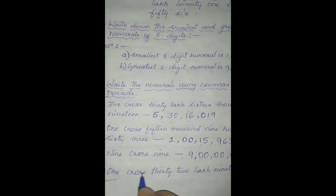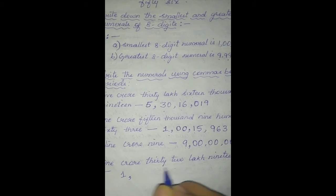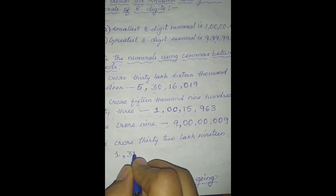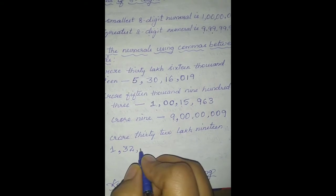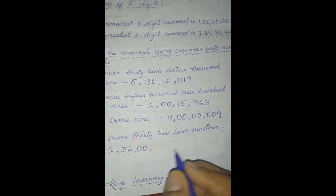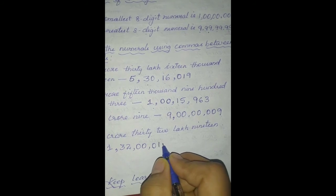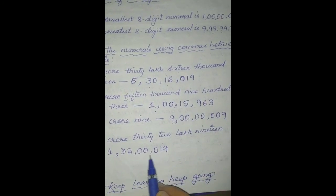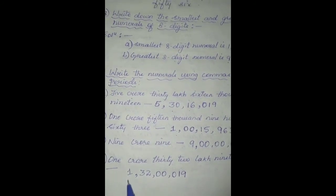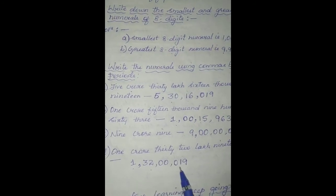Next one: 1 crore, 32 lakhs, 19. Start with 1 crore, 32 lakhs. There is no thousands place, so write 0. There is no hundreds place either, so write 19. Count the digits: 1, 2, 3, 4, 5, 6, 7, 8 — yes, it's an 8-digit number. So the numeral is: 1,32,00,019.